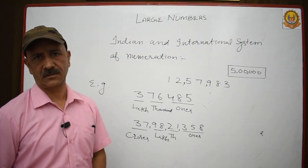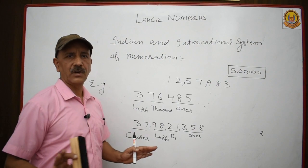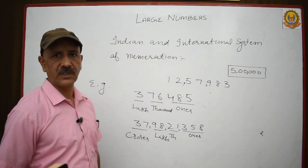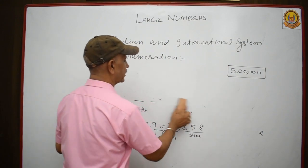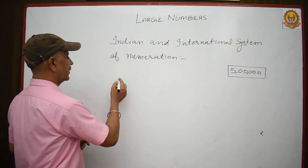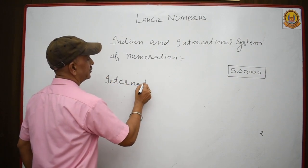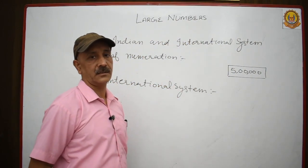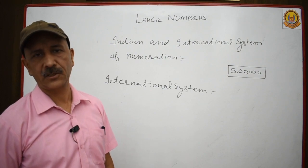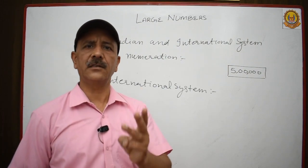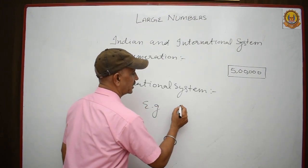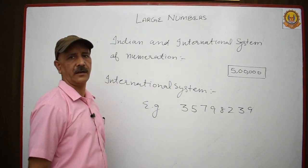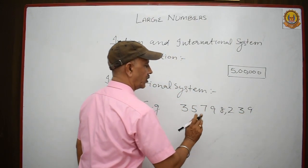In the international system it is totally different according to periods. In this system, we put commas after every three digits — each period contains three digits. For example: 5,79,82,39 — we put comma: one, two, three comma; one, two, three comma.